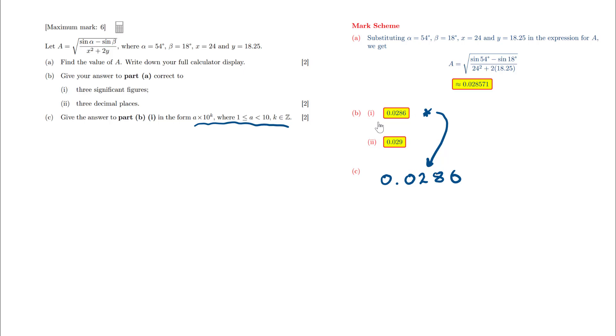0.0286. I need to convert this number into a number between 1 and 10, so the decimal point needs to be after the 2, 2.86. So the current decimal place needs to move once, twice. And it's a small number, so the number will become 2.86 multiplied by 10 to the power of negative 2.